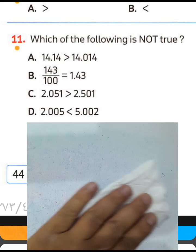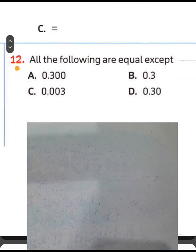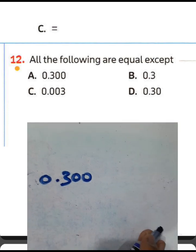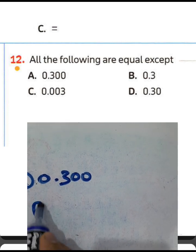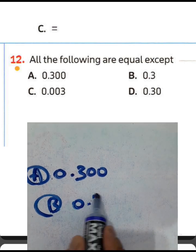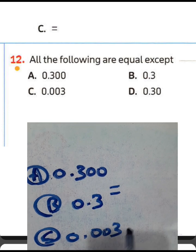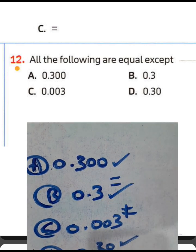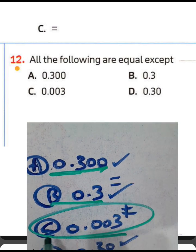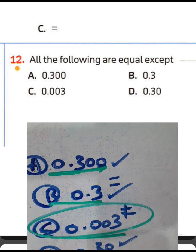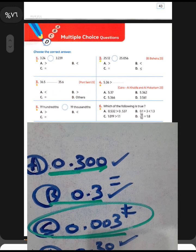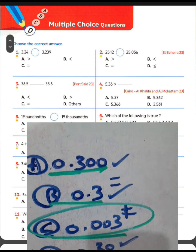Question twelve: all the following are equal except — we have 0.3. Letter A and letter B are 0.3, letter D is 0.30, all of which are equal. But letter C is 0.003, which is not equal to 0.3. Choose letter C for question twelve. That was all 12 questions from page 44 of the Master Book — study hard, and in the next lesson we'll solve more multiple choice questions. Goodbye!